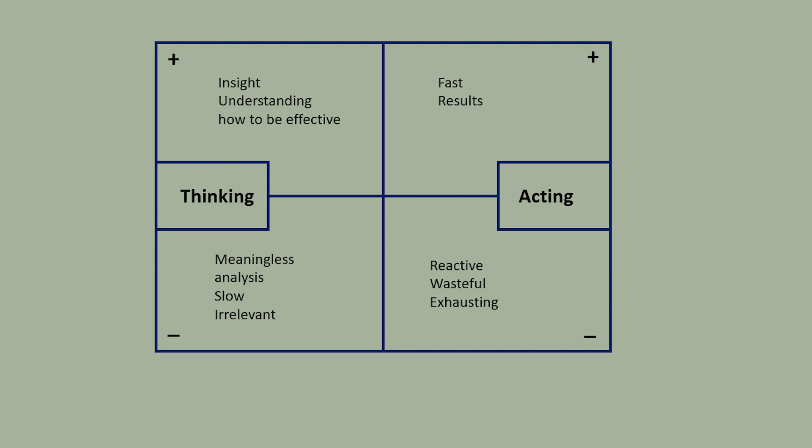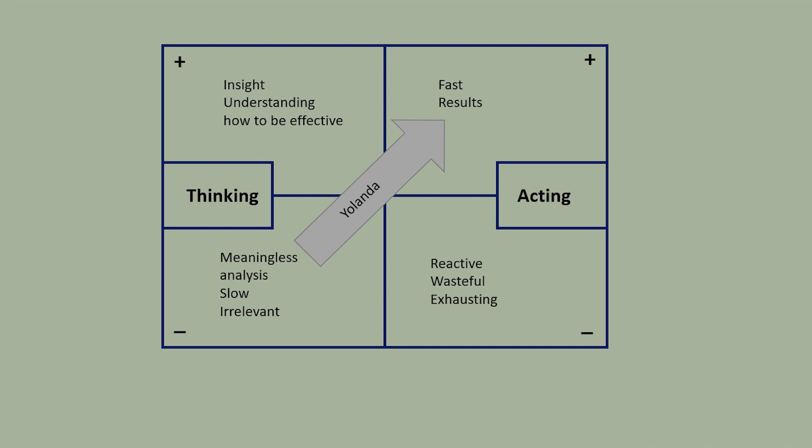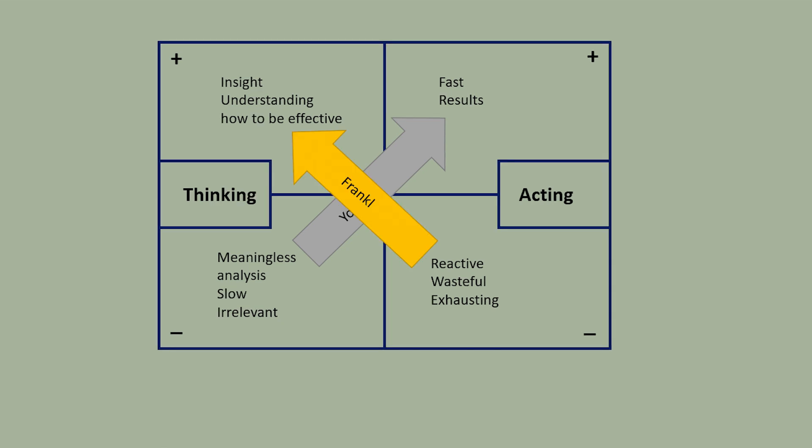The map shows how people, and mice, can get stuck in arguments. Yolanda may tell Frankel his thinking is slow, irrelevant, and he needs to help with the action. The mouse community need to get fast results. She's going to concentrate on the two parts of the map that support her view, the downside of thinking and the upside of acting. At first, Frankel mirrors Yolanda. He might say she's being reactive and wasteful and needs to have more insight, more understanding. If they get stuck in this conflict, they're just going to talk past each other.